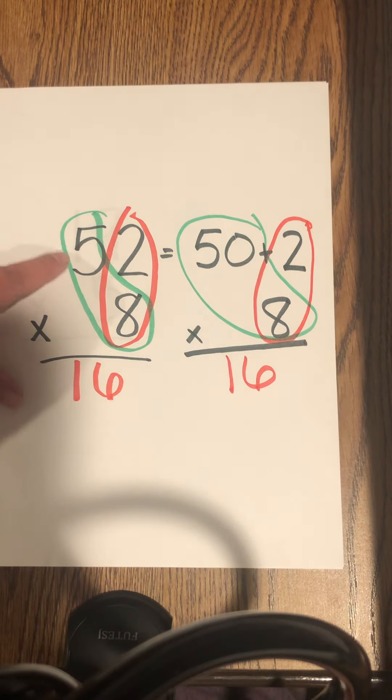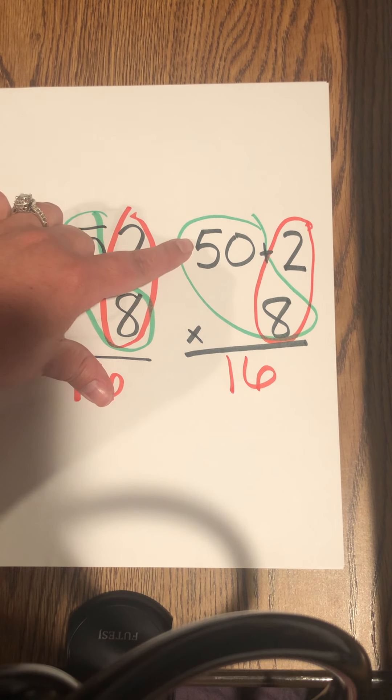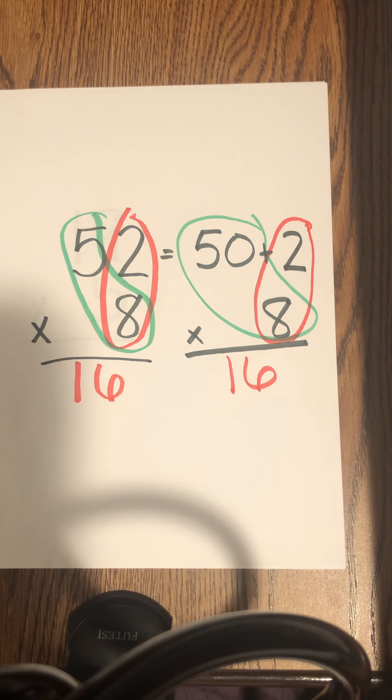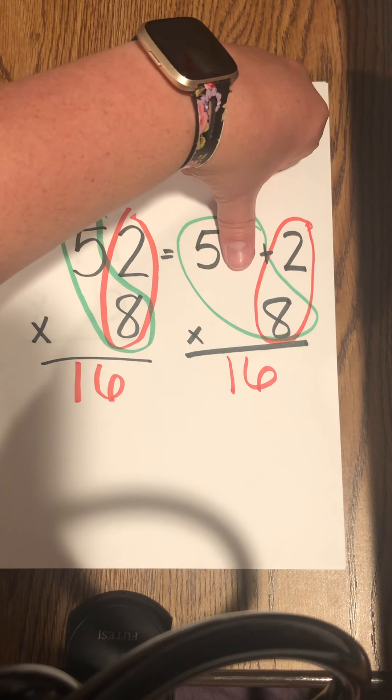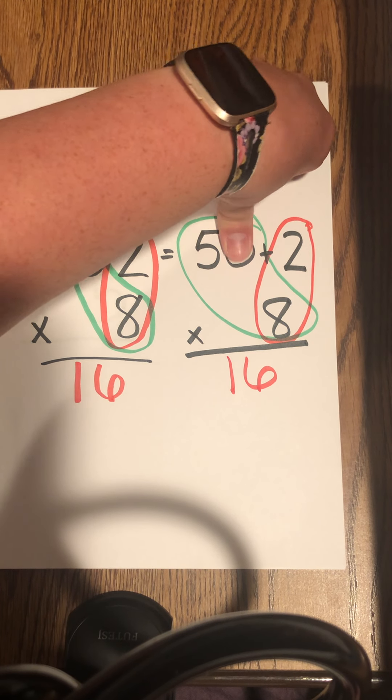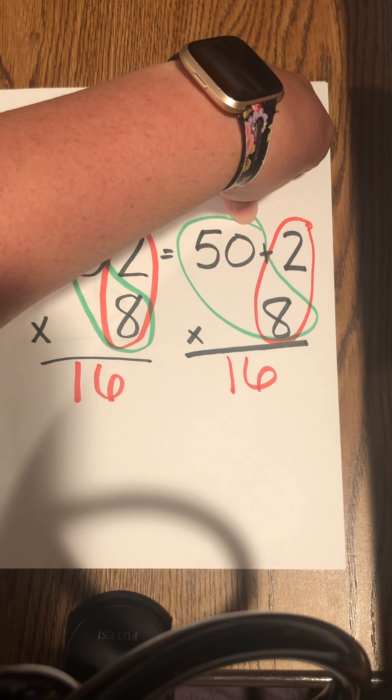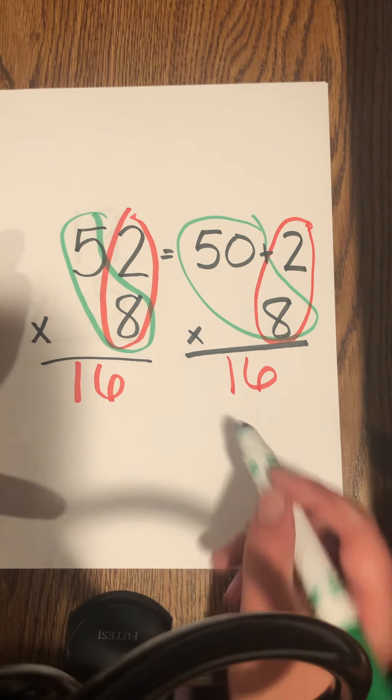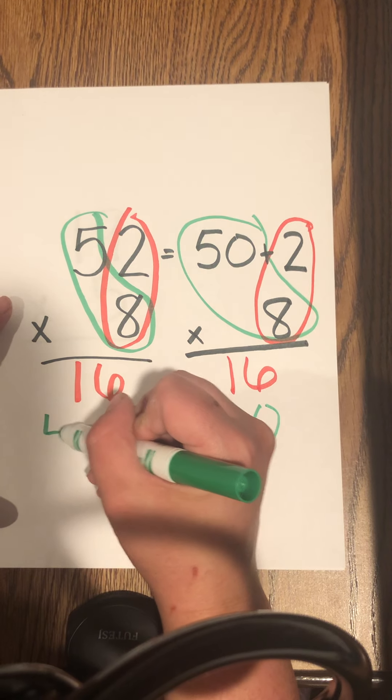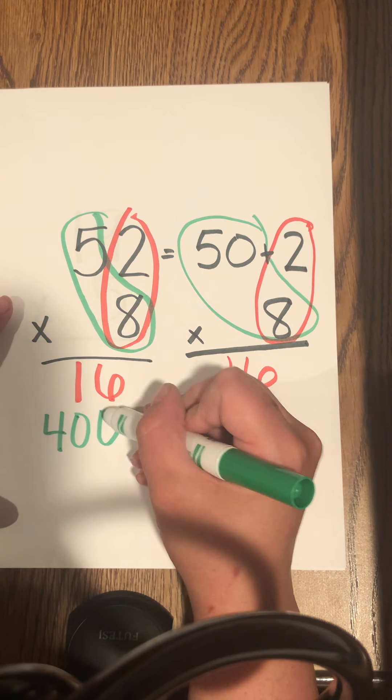Remember, it's not 5 times 8, it's 50 times 8. So 5 times 8 is, that's what I'm going to do, hide the 0. So 5 times 8 is 40, bring the 0 back, what would that be? 400.